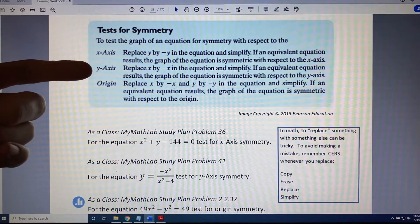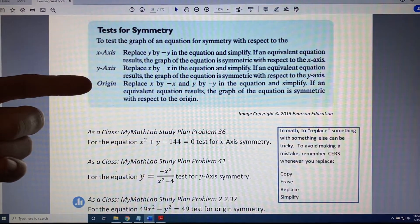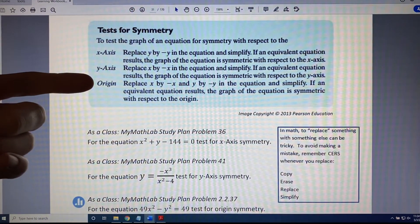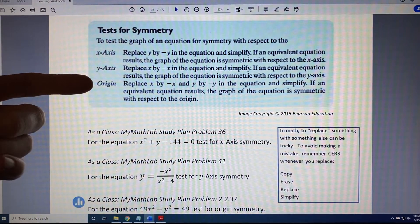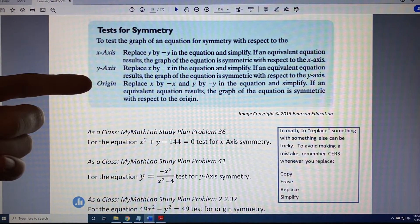then it isn't. To test the graph of an equation for symmetry with respect to the origin, replace x by negative x and y by negative y in the equation and simplify. If an equivalent equation results, the graph of the equation is symmetric with respect to the origin.